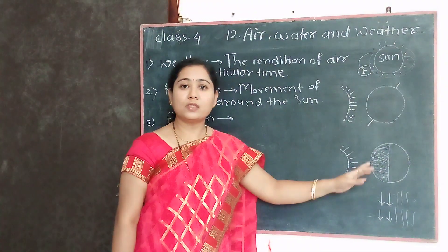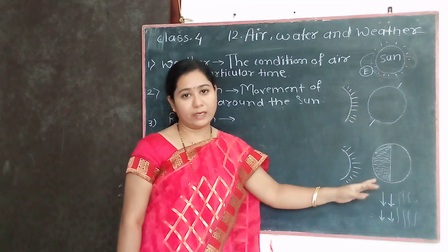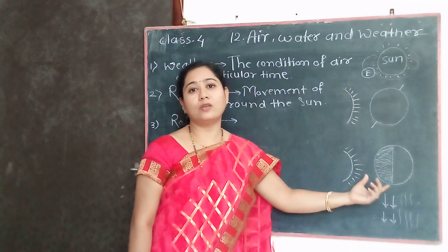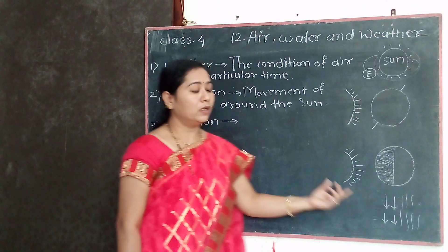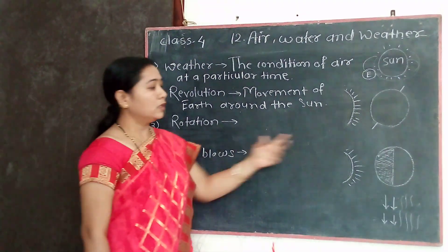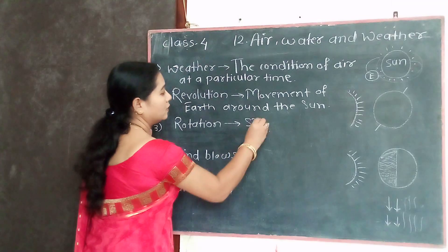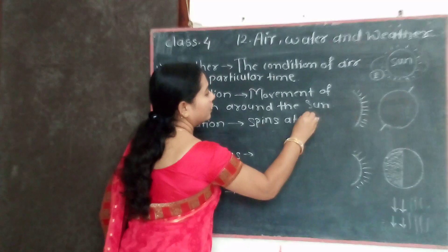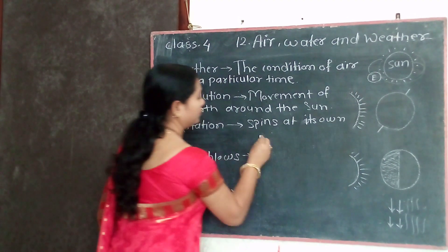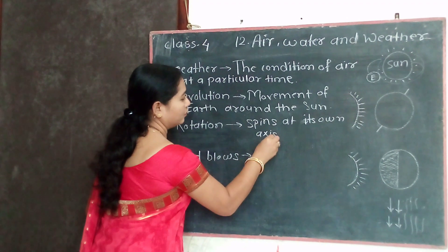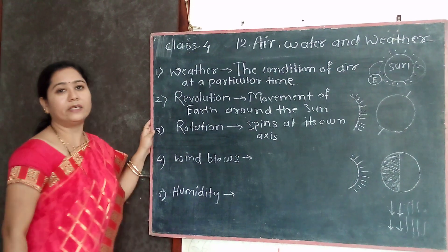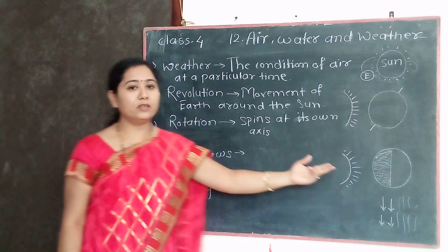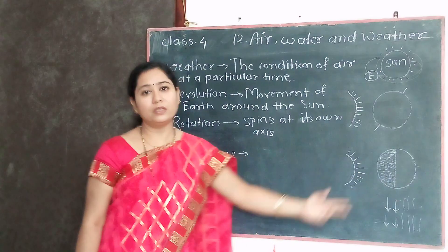The earth also spins at its own axis, and because of this, day and night occur on the earth. That is called rotation. The spinning of the earth at its own axis is called rotation, and rotation causes day and night on the earth.